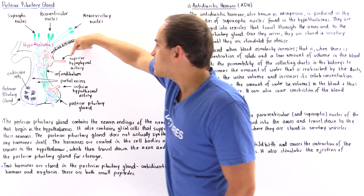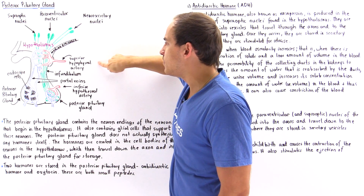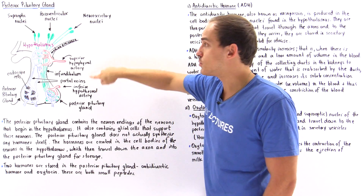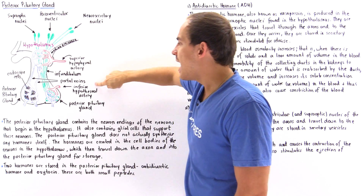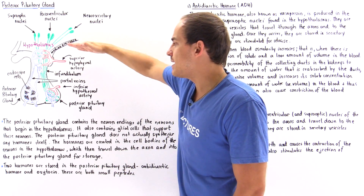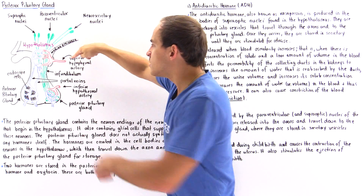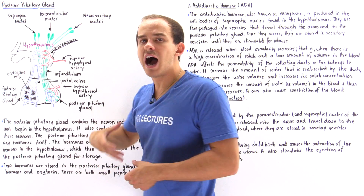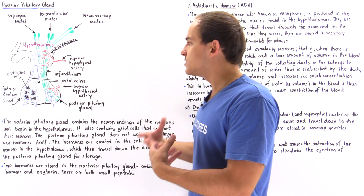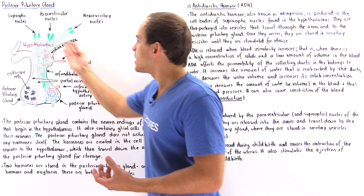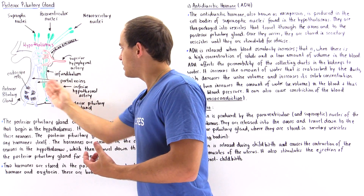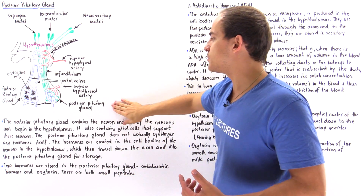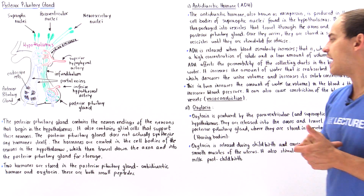The superior hypothalamic artery and the inferior hypothalamic artery bring oxygenated blood and nutrients to both the hypothalamus and the posterior pituitary portions of the gland.